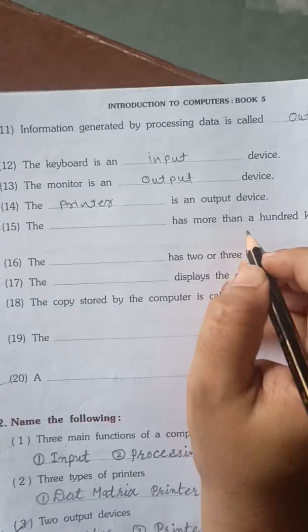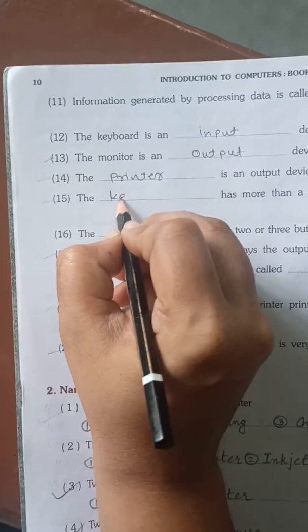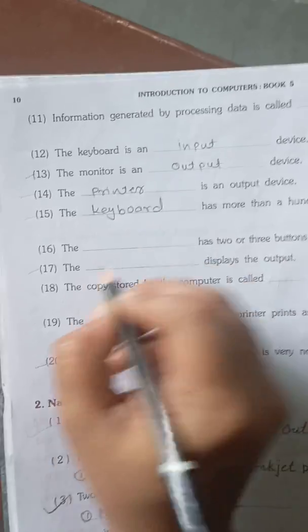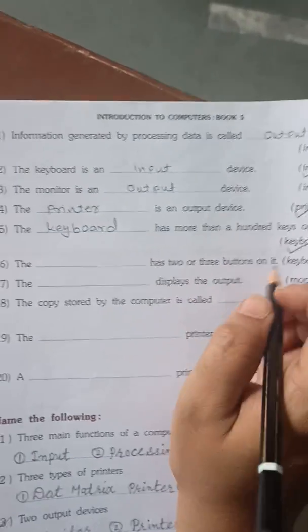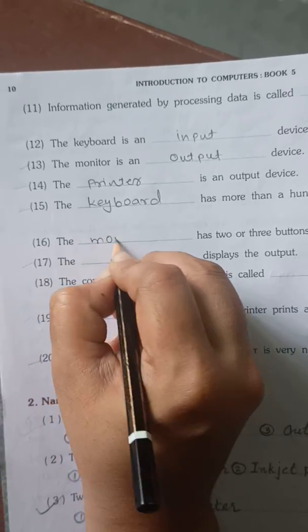The blank has more than a hundred keys on it. So hundred keys are on what? On keyboard. The blank has two or three buttons on it. Meaning two or three buttons are on what? On mouse.